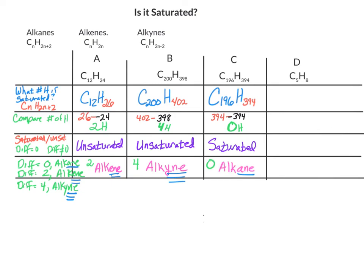And finally, let's look at compound D. It has only 5 carbons, so if it were an alkane we would have C₅H₂ˣ⁵⁺², which gives C₅H₁₂. The difference between 12 and 8 is 4, which means we have an unsaturated compound. And since the difference is 4, we do have an alkyne.